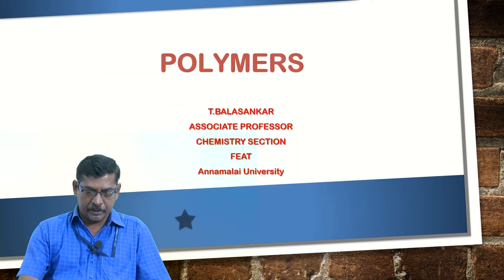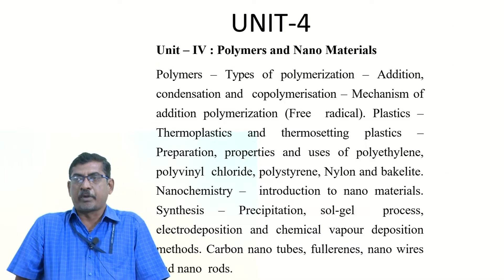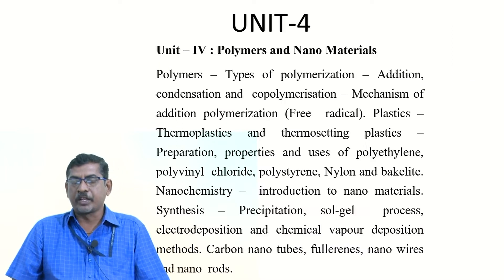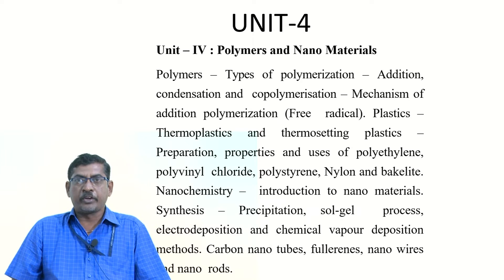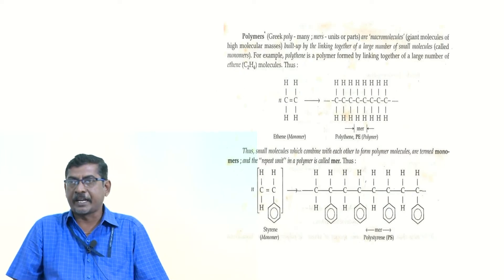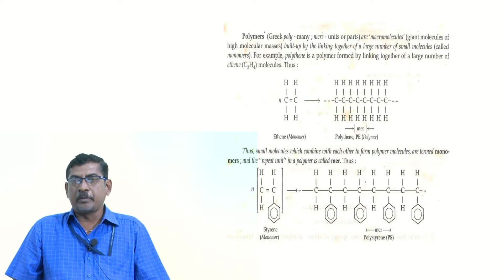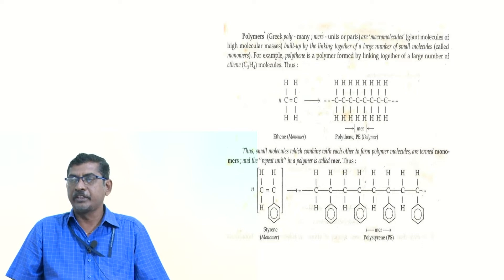Polymer is a macromolecule made by linking a large number of small molecules. The small molecules are called monomers. They are combined together in the presence of temperature, pressure, and catalyst to form a macromolecule or bigger molecule called polymer. In Greek, 'poly' means many and 'mer' means units, so many units combined together is called polymer.